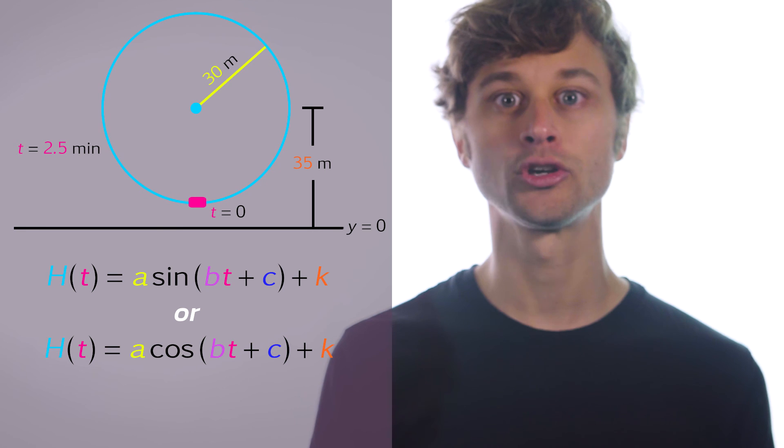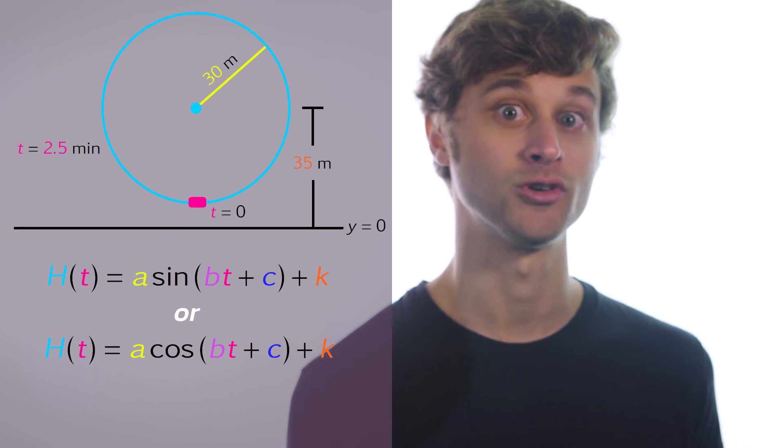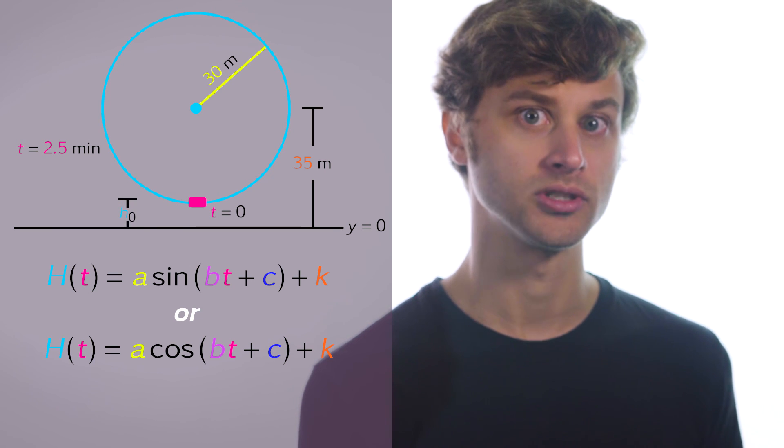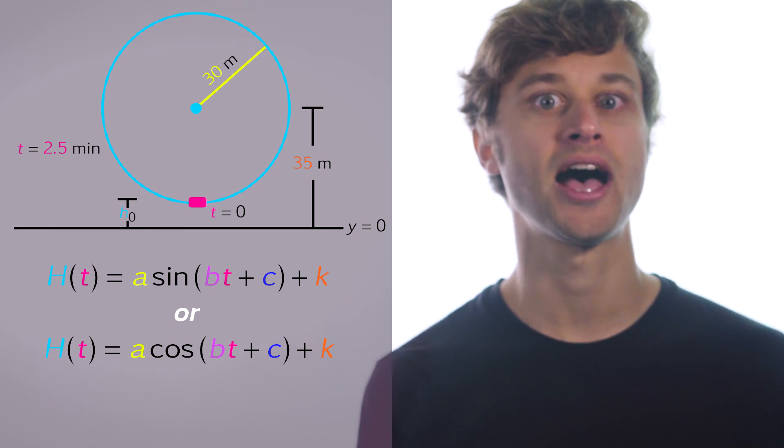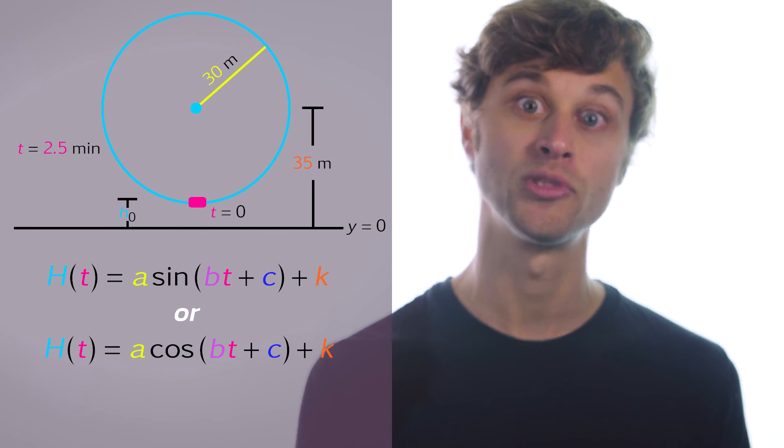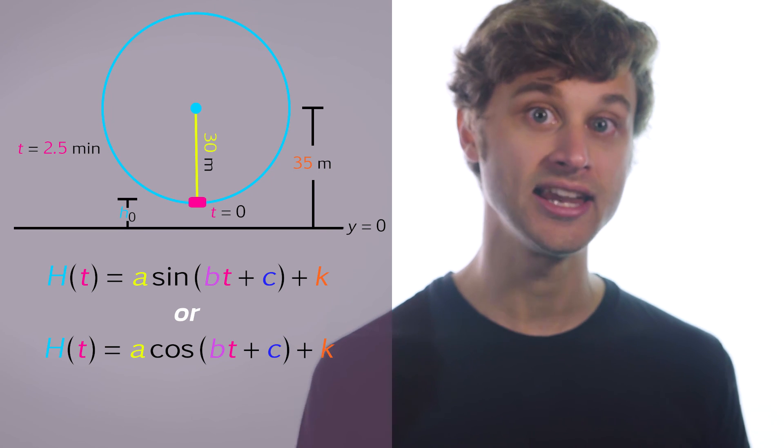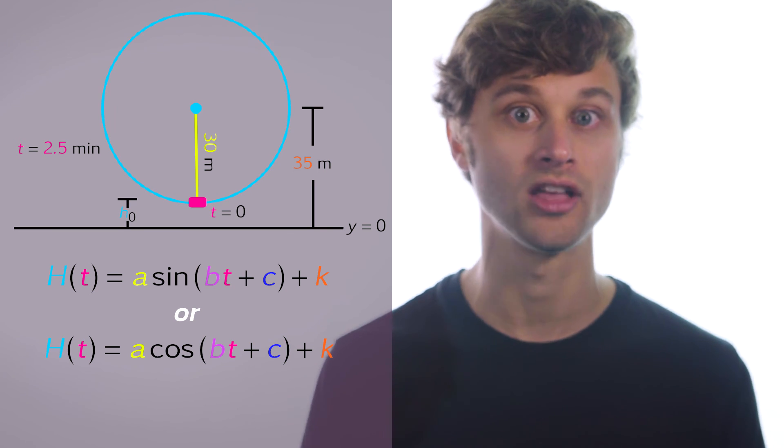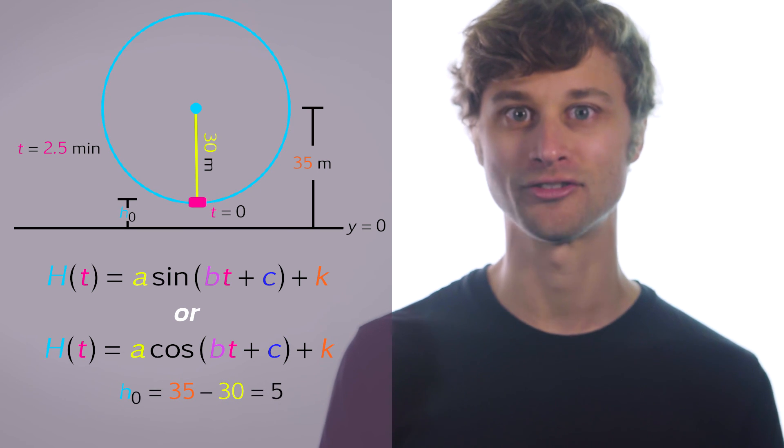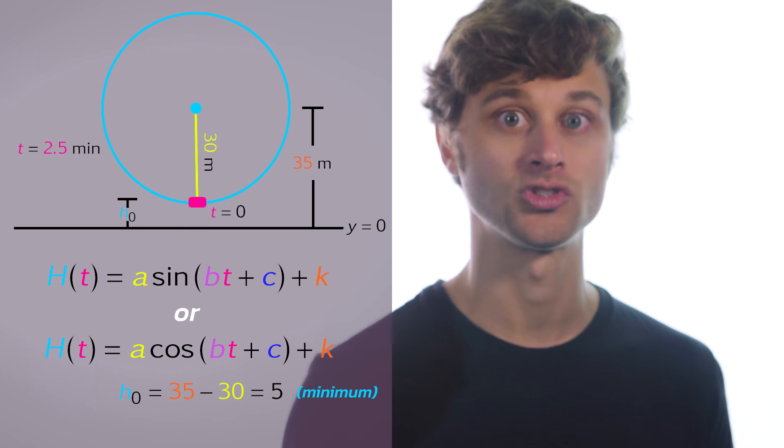So which one do we want to use, sine or cosine? Well, if we take a look at this problem, we see that the passenger gets on at the bottom of the Ferris wheel, which is a height h above the ground. We can find that h by subtracting the height of the center of the Ferris wheel from the radius of the Ferris wheel, and that distance or height above the ground that the passenger gets on the Ferris wheel at is just 35 minus 30, which is equal to 5.